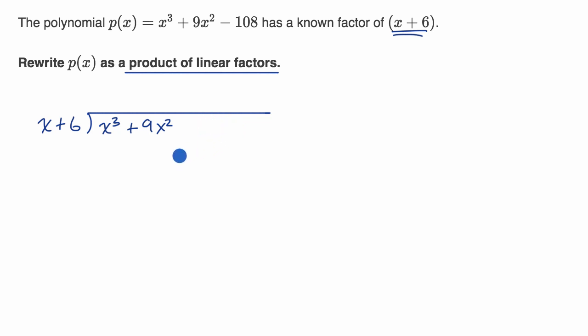So to make sure we have good hygiene, we could write +0x, and I encourage you to actually always do this if you're writing out a polynomial so that you don't skip that place, so to speak, minus 108.